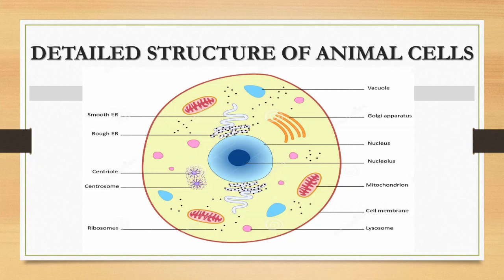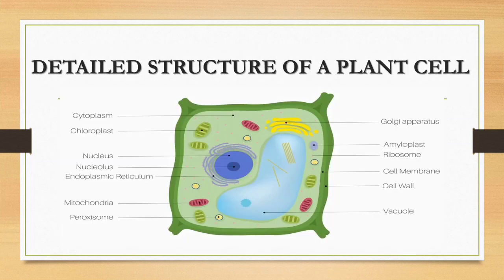These are the structures that I want you to know about the animal cell. Let's now talk about the detailed structure of a plant cell. All the structures I've talked about in the animal cell are also found in the plant cell. The only distinction is the cell wall and chloroplasts. So we're just going to talk about these two structures.